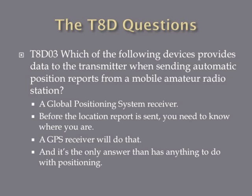Which of the following devices provides data to the transmitter when sending automatic position reports from a mobile amateur radio station? The answer is a Global Positioning System Receiver. The key word in this question is "position," and the only answer that has anything to do with providing a position is a GPS receiver. The first thing you need to do when transmitting your position is find out where you are, and a GPS receiver does that.